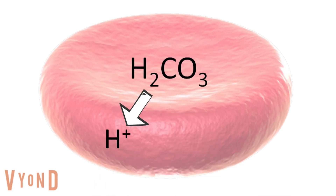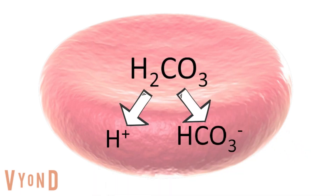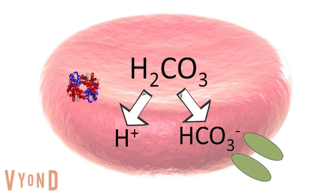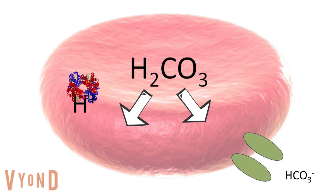It dissociates into hydrogen ions and bicarbonate ions. The bicarbonate ion moves out of the red blood cell through a protein channel. The hydrogen ion binds to hemoglobin, triggering the Bohr effect. The bicarbonate ion channel also co-transports chloride into the red blood cell. This is called the chloride shift.